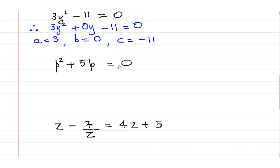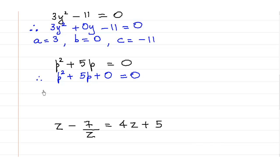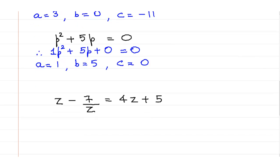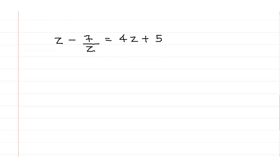Next: p² plus 5p is equal to 0. We see that there is a missing constant term, so we can rewrite this as p² plus 5p plus 0 is equal to 0. The value of a is 1 because if nothing is written before p² the coefficient is 1 by default. The value of b is positive 5 — always take into consideration the sign. And the value of c is 0, the missing constant term. So this is also a quadratic equation.